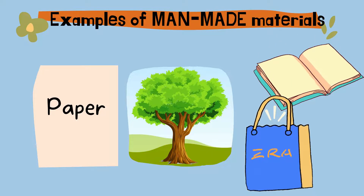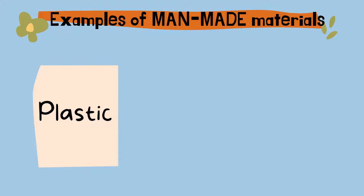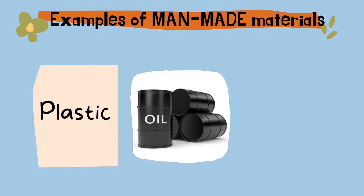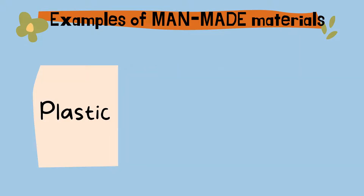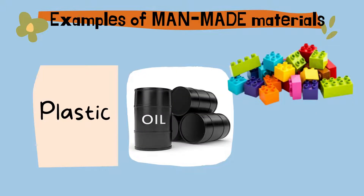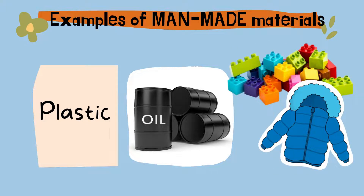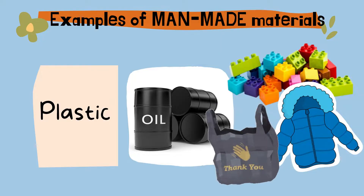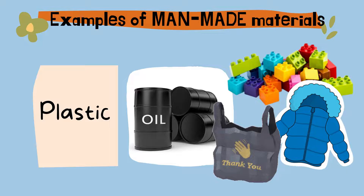The second man-made material is plastic. Plastic is made from a type of oil found in the ground. It is used to make things like plastic toys, plastic clothing, plastic bags, and many other plastic objects.